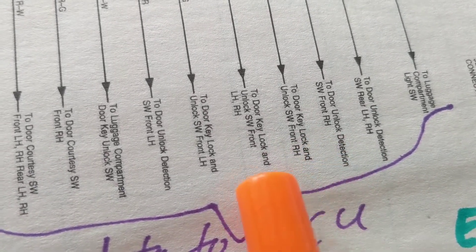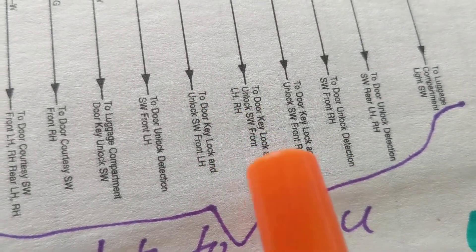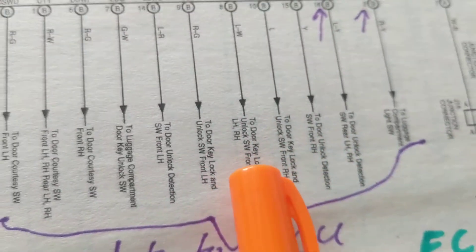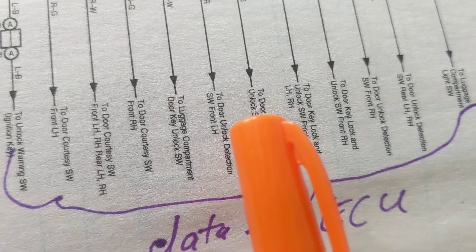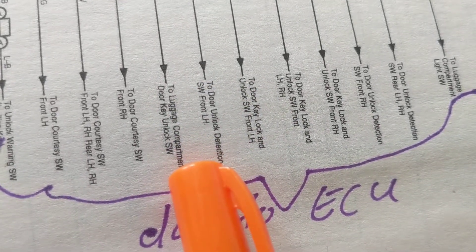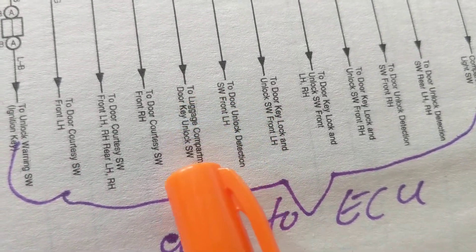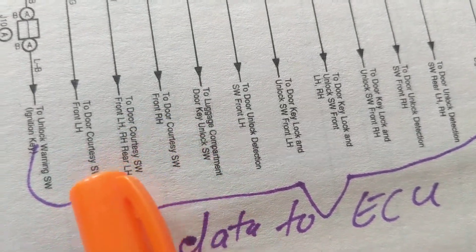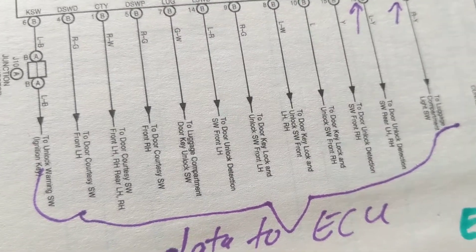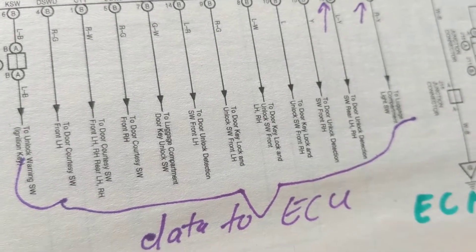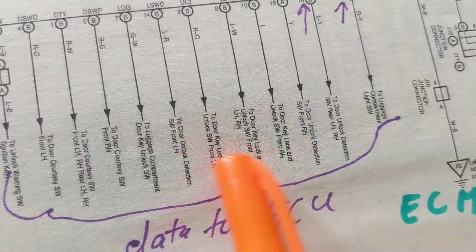Door key lock and unlock switches go to these locations - front right, front left - to detect if anything has been tampered with. Door unlock detection, luggage compartment, door key unlock switch - if somebody tried to tamper with that or unlock the door, the door courtesy switches front and rear, the luggage compartment trunk, and windows if somebody tried to break in - all these things are being monitored.